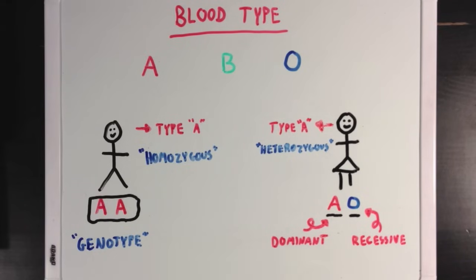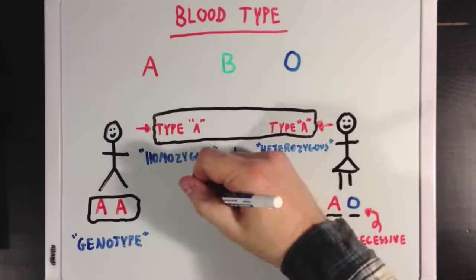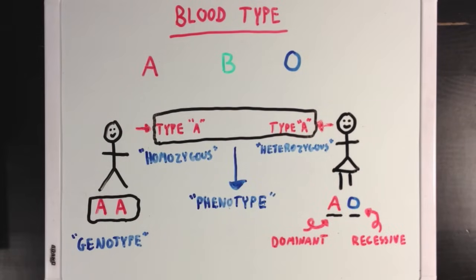But we can also look at a person's physical traits, which we call the phenotype. So for this guy and girl, the phenotype would be blood type A. So you can see that genotype and phenotype are different, but it is possible for two different genotypes to make the same phenotype, since some alleles are dominant over others.